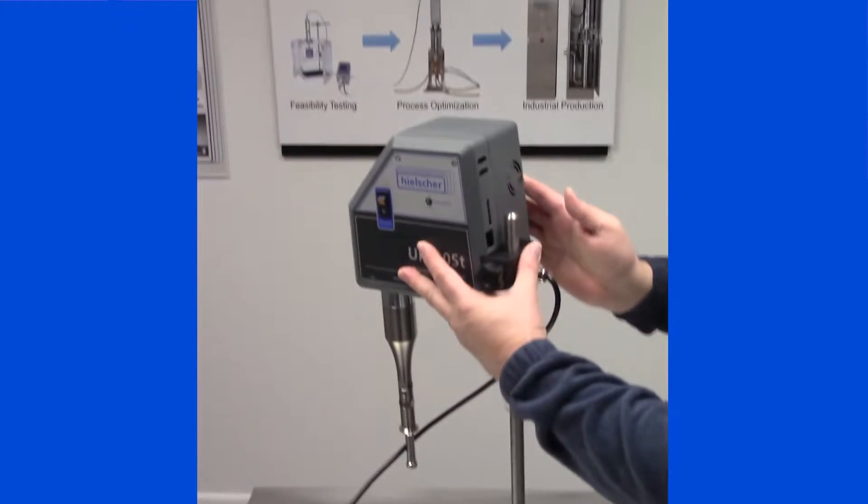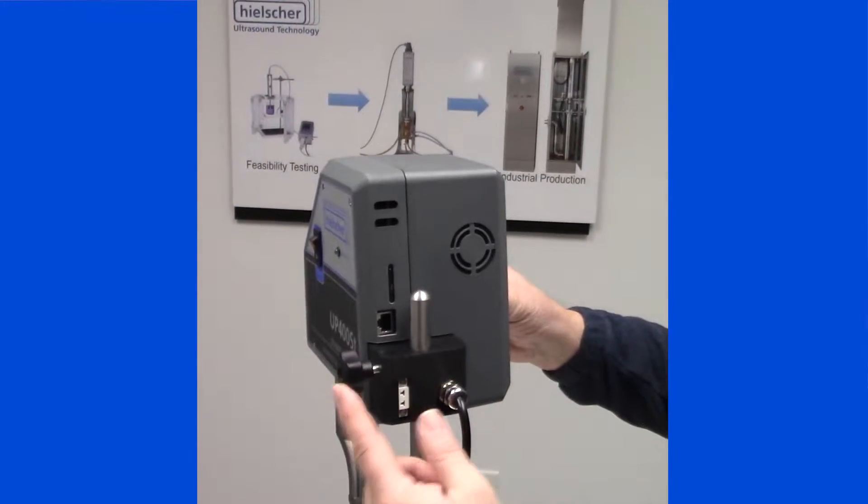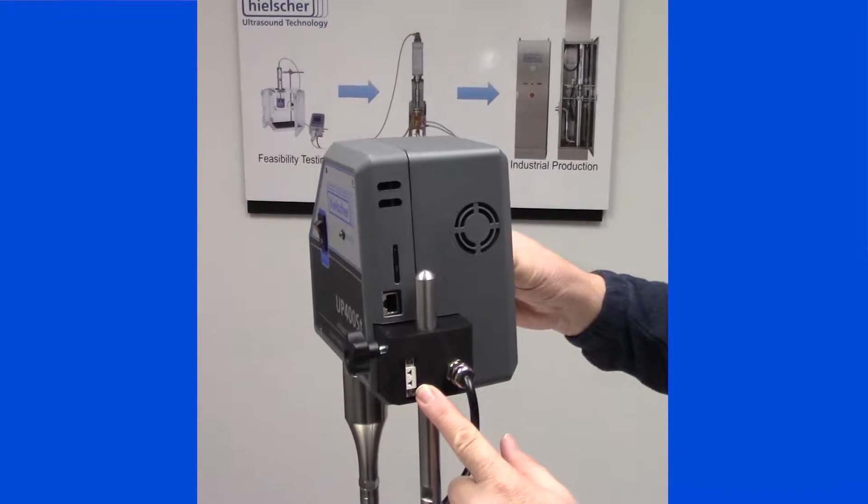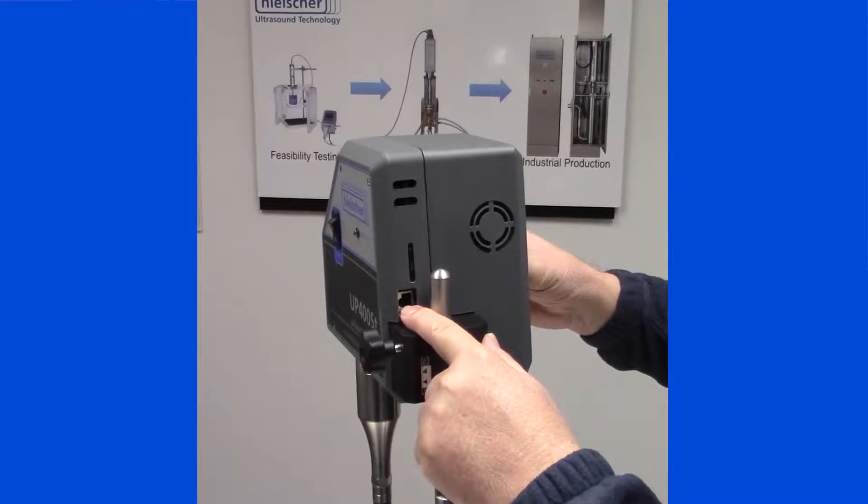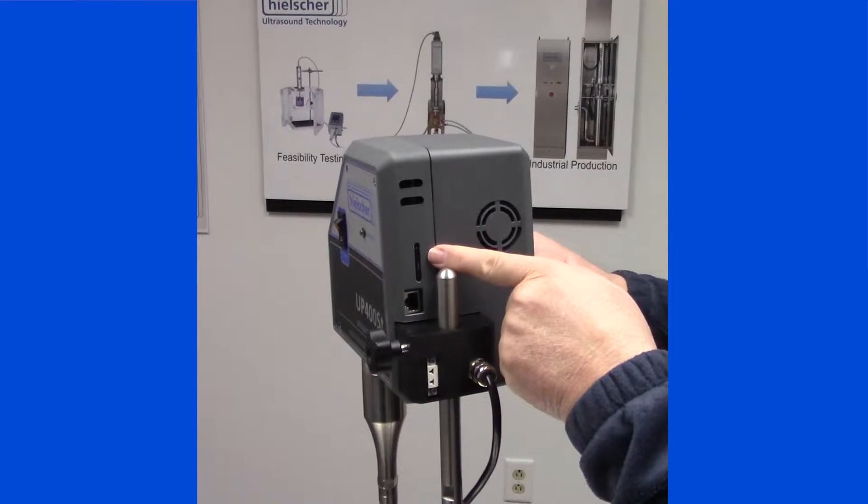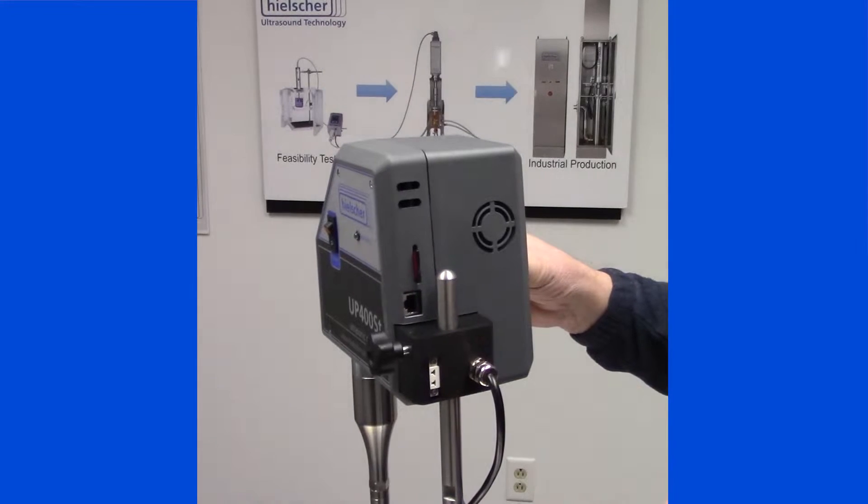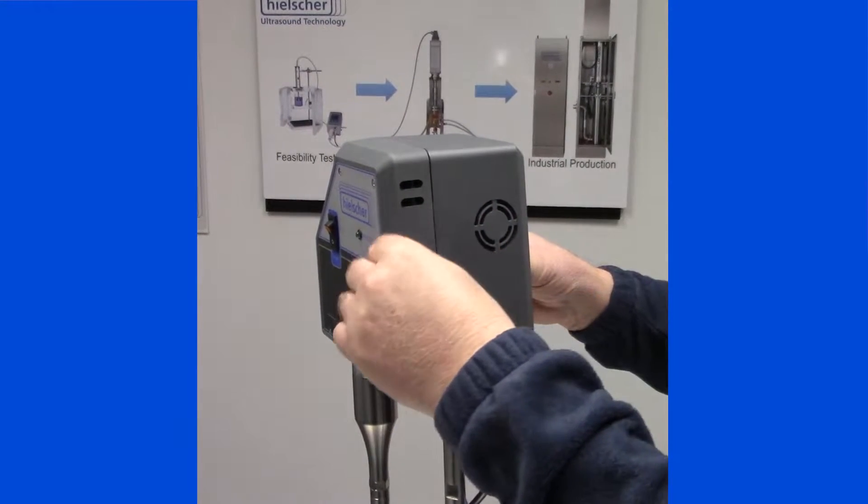Let's take a look at the back of the unit. We have the handle, first and foremost, to adjust the height of the unit. Temperature probe inlet, Ethernet port, SD card for where it records all your data. Let's just pop that in and out really quick. That's how easy it is to get your data card out.